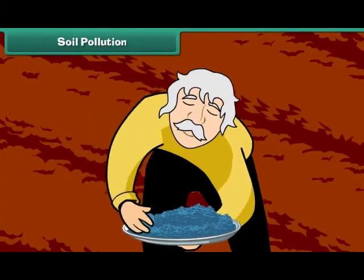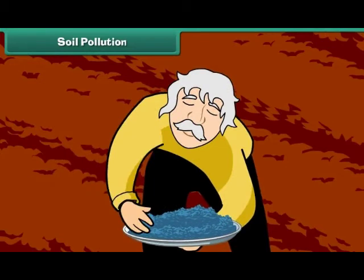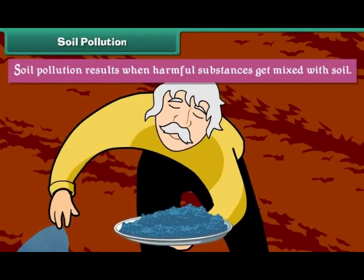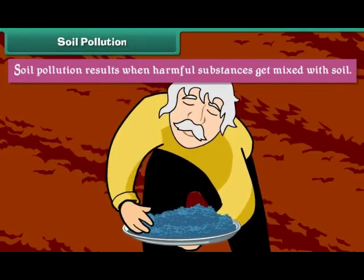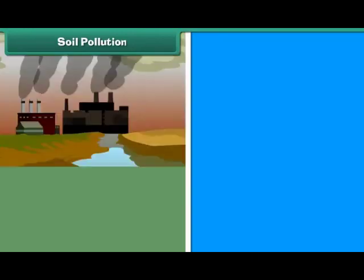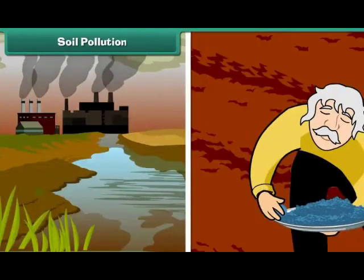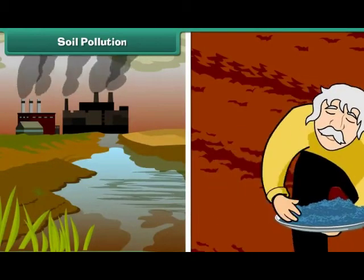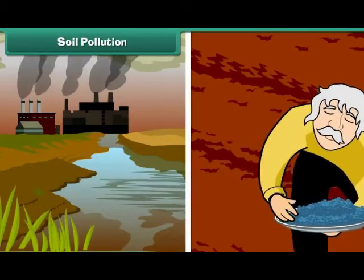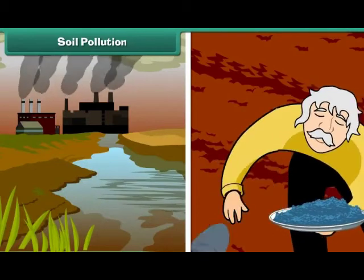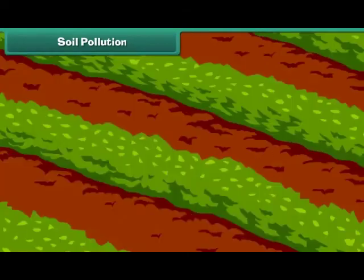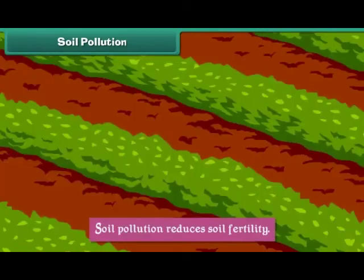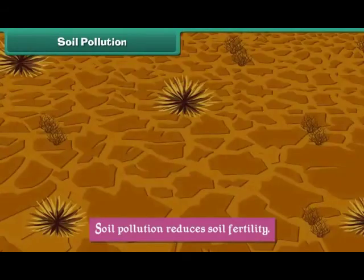Soil Pollution. Soil pollution results when harmful substances get mixed with soil. Industrial waste, fertilizers, pesticides, and insecticides pollute soil. Soil pollution reduces soil fertility.